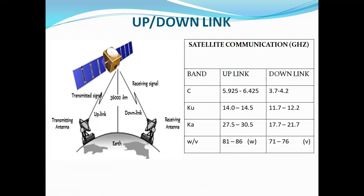For Ku band, uplink is 14.0 to 14.5 GHz and downlink is 11.7 to 12.2 GHz. For Ka band, uplink is 27.5 to 30.5 GHz and downlink is 17.7 to 21.7 GHz. For WV band, uplink is 81 to 86 GHz (W band) and downlink is 71 to 76 GHz (V band).